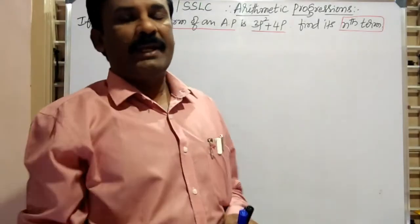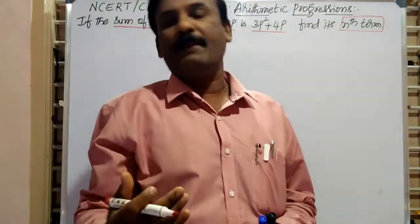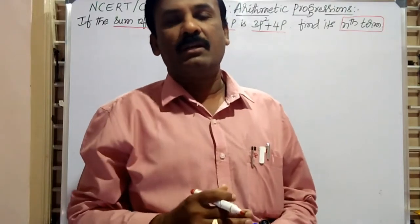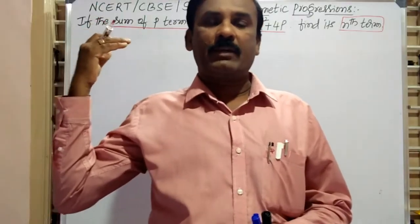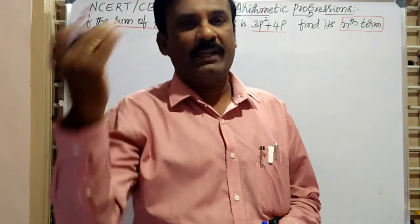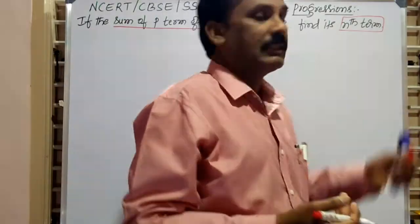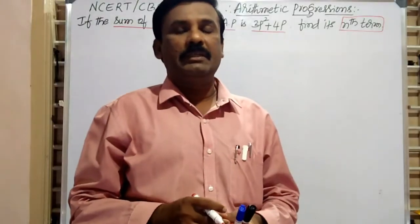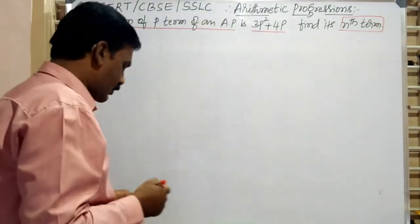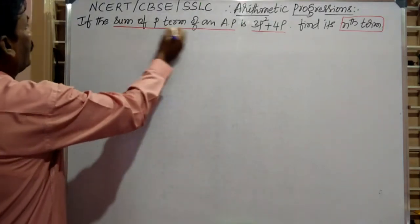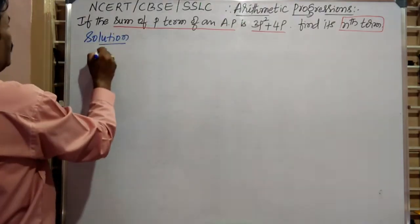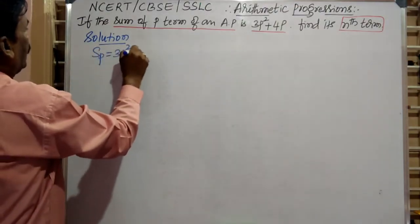This question involves the sum of p terms, and we need to help find the first term and common difference. The first term and common difference are key elements of arithmetic progressions. So the solution begins: Sp is equal to 3p squared plus 4p.